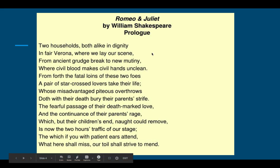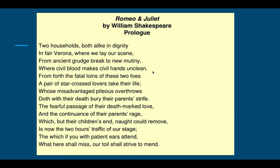We also see the rhyme scheme here: A, B, A, B, C, D, C, D, E, F, E, F, G, G. Within each quatrain, every other line rhymes — we've got 'dignity' with 'mutiny,' 'seen' with 'unclean,' 'foes' with 'throes,' 'life' with 'strife,' and so on. We do see an approximate rhyme with 'love' and 'remove,' telling us that perhaps in Shakespeare's time these two words may have sounded more similar than they do today.